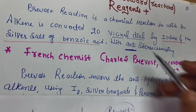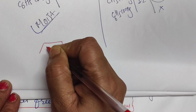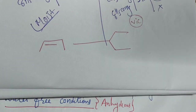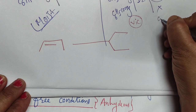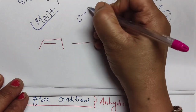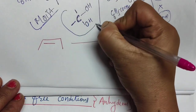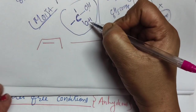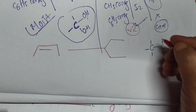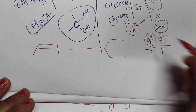When we talk about this reaction in detail, we see that any alkene gets converted to vicinal diols. When we say gem-dihalide, it means when any group is present on the same carbon atom — for example, if a carbon has two OH groups on the same carbon, those are gem-diols. But in vicinal diols, the two OH groups are present on different adjacent carbon atoms.